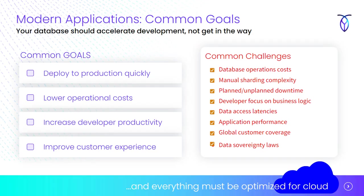These days, a lot has happened, but actually nothing's changed when we think about our common goals. Everyone is trying to deploy to production much quicker — that's what Kubernetes is about. We all want to lower operational costs, increase developer productivity, and ultimately deliver a better customer experience. These are the goals of pretty much every single organization I've been involved with.